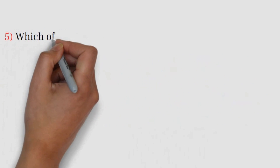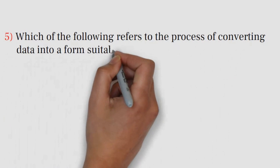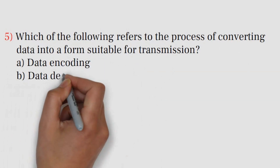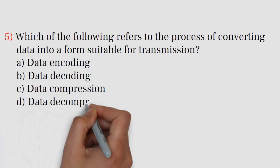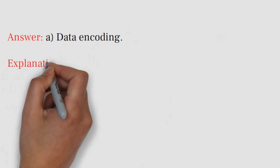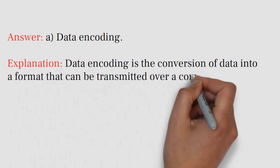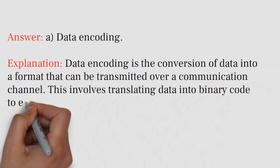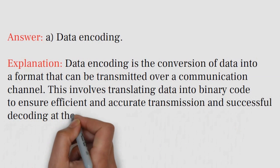Question number five: Which of the following refers to the process of converting data into a form suitable for transmission? A) Data Encoding, B) Data Decoding, C) Data Compression, D) Data Decompression. Answer: A) Data Encoding. Explanation: Data encoding is the conversion of data into a format that can be transmitted over a communication channel. This involves translating data into binary code to ensure efficient and accurate transmission and successful decoding at the receiving end.